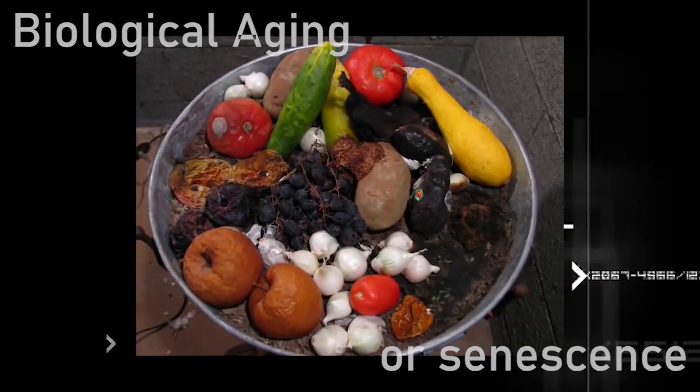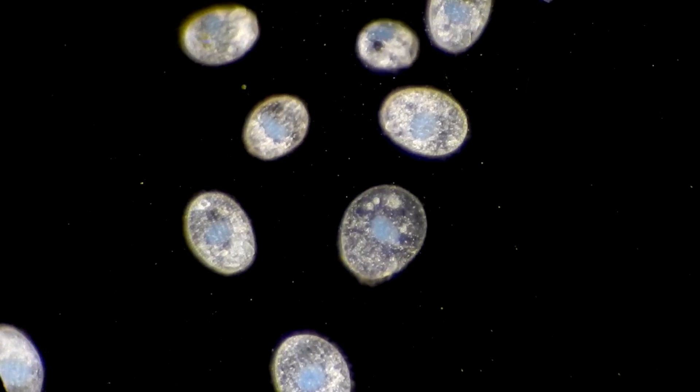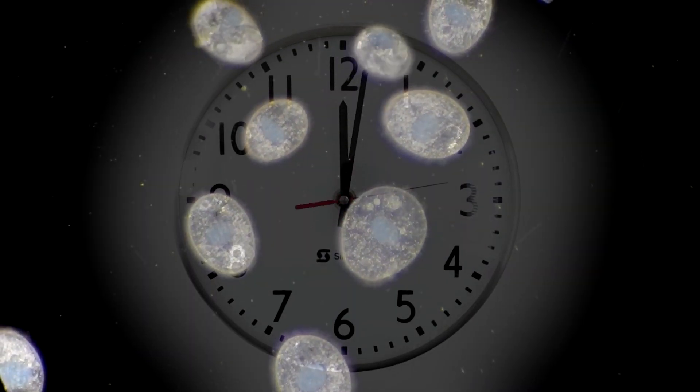Biological aging, or senescence, is the gradual deterioration of an organism's function over time. From birth, our cells multiply, age, die, and repeat.